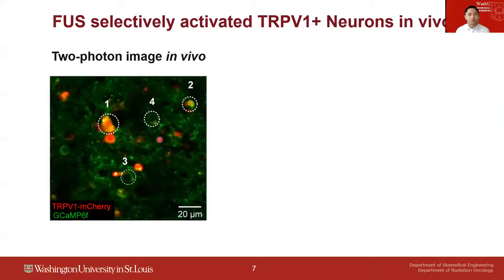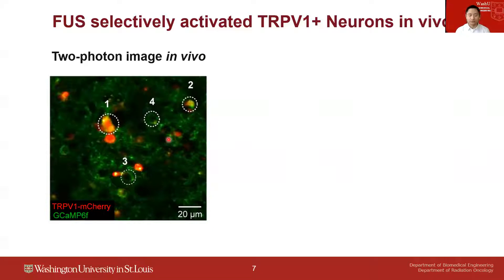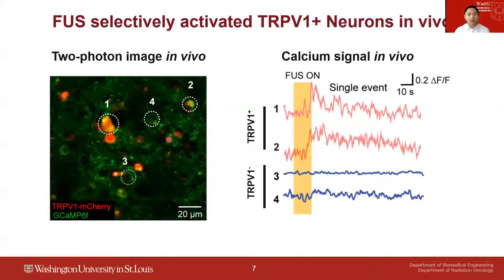We can identify two types of neurons. One type, such as neuron 1 and neuron 2, both express TRPV1 (red color) and also express the calcium indicator (green color). Another type, like neuron 3 and neuron 4, only expresses the calcium indicator without expression of TRPV1. By analyzing the calcium signals over time, we can clearly see that only neurons overexpressing TRPV1 can be activated by ultrasound, while the surrounding wild-type neurons without TRPV1 expression are not affected.